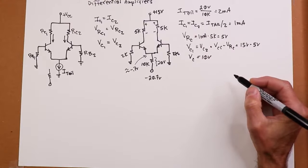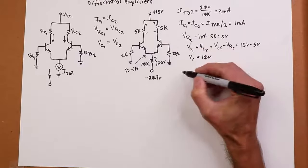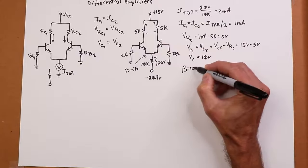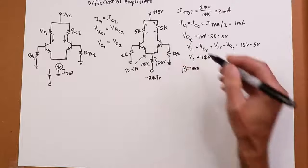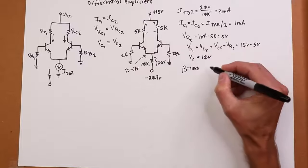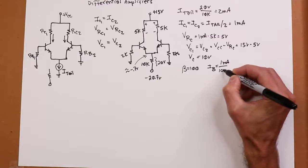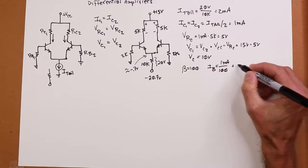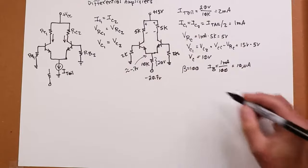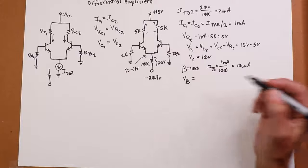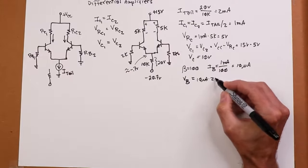If I have a known beta value, let's say beta's 100, nice round number, perfectly matched for each of these things. Then, I would know that the base currents would be 1 milliamp divided by 100. So that's 10 mics. And if I pass 10 microamps through 2K, the drop,